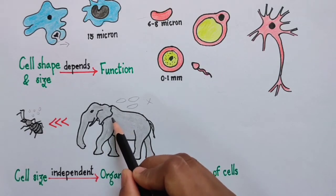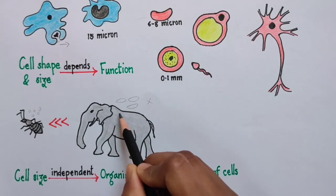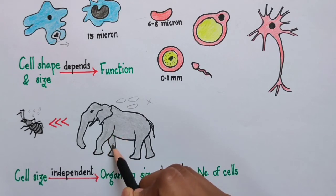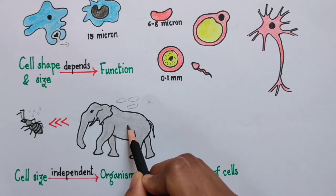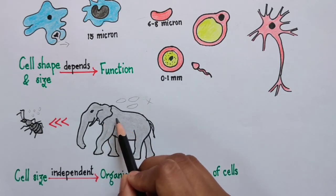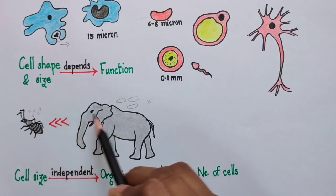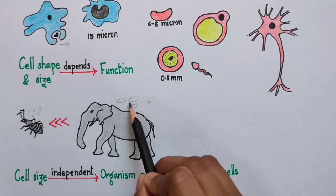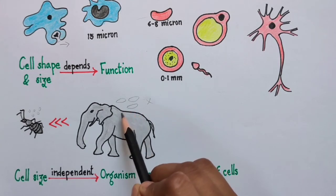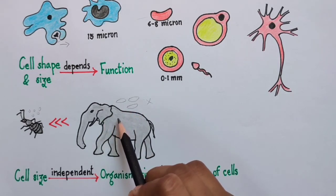It is just that the elephant is having more cells, and as a result it is so huge. So we cannot say that this organism is small so it will have small cells, and if the organism is big, it is going to have big cells. The size of the cell will depend upon its function, as we have discussed already.